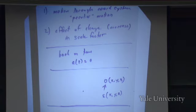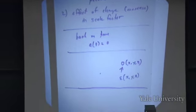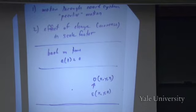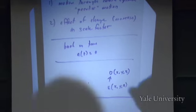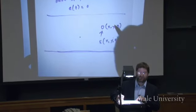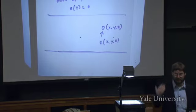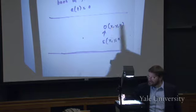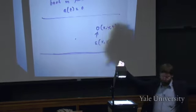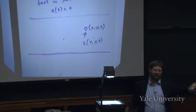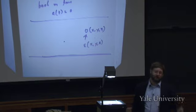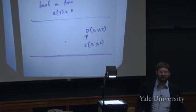A student asks: if A(t) = 0 times the coordinate, why is there a point at all rather than nothing? If A = 0, all events are at coordinates (0,0,0) — that point is occupied. As you run the scale factor backwards toward zero, everything gets closer and closer to zero, and at A = 0 it's all piled on top of itself.